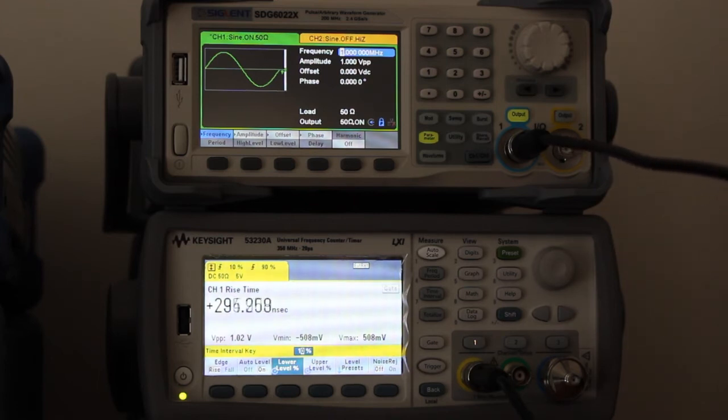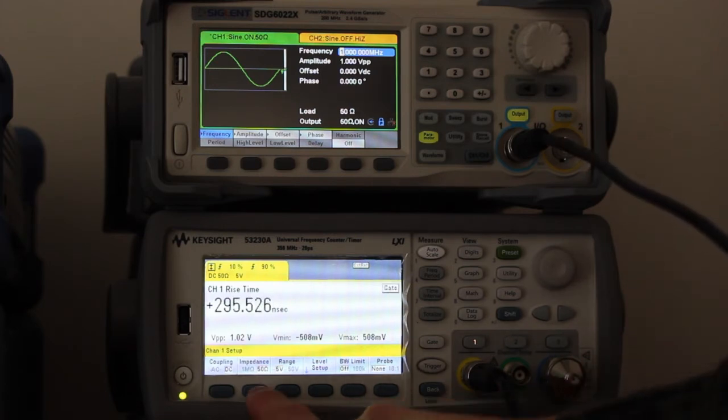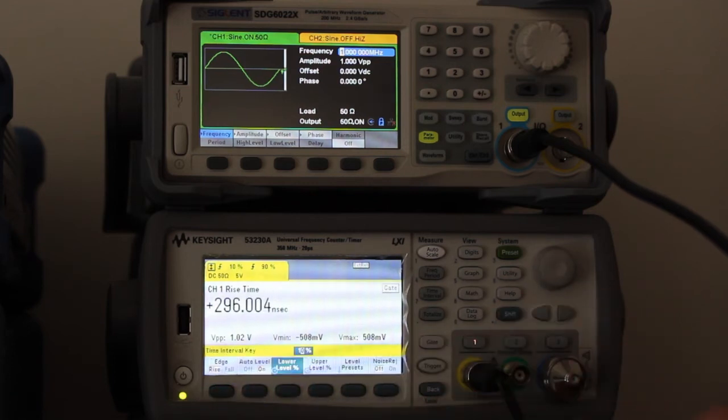This is an instrument with 20 picoseconds of accuracy, but actually this unit has 8.5 picoseconds of accuracy. And it's important to notice that to make this kind of measurement you need to terminate the cable properly. You see here it's terminated with 50 ohm and coupling is DC. Both instruments have an external time base, rubidium time base of 10 megahertz, so they are synchronized.